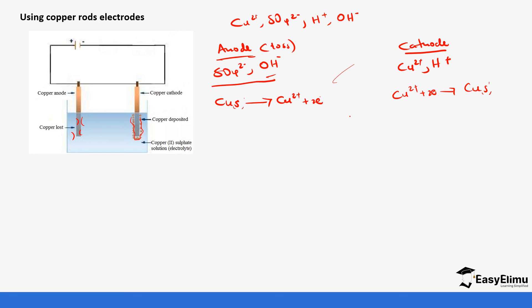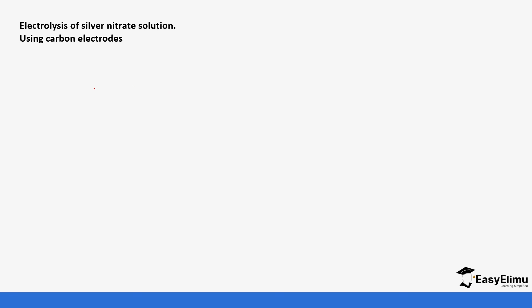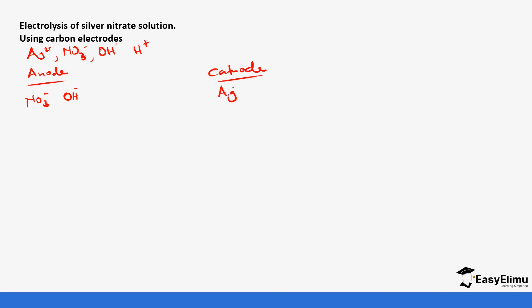Now let's look at another example: silver nitrate, first using carbon electrodes and then silver electrodes. The ions present are silver ions, nitrate ions, OH⁻ ions, and hydrogen ions. At the anode, the anions are nitrate ions and OH⁻ ions. Between nitrate and OH⁻ ions, nitrate is more positive than OH⁻ ions, so OH⁻ ions are preferred. So: 4OH⁻ → 2H₂O + O₂ + 4e⁻. These four electrons travel to the cathode.